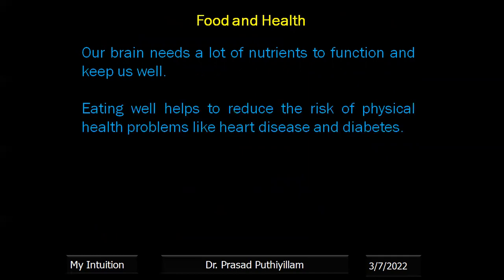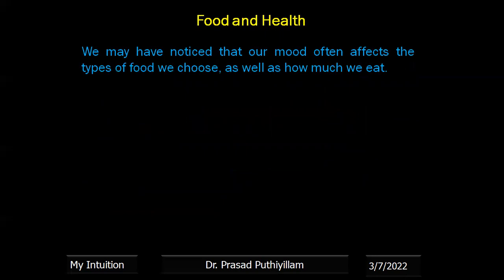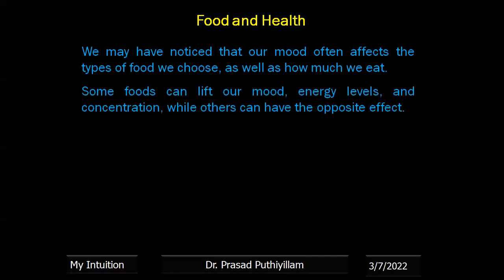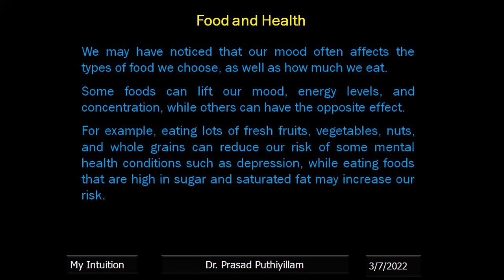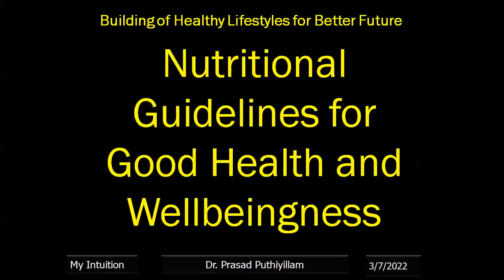The second topic is food and health. Our brain needs a lot of nutrients to keep us well. Eating well helps to reduce the risk of physical health problems like heart disease and diabetes. It also helps with sleeping better, energy levels and our general health. We may notice that our mood often affects the type of food we choose and how much we eat. Some foods can lift our mood, energy levels and concentration while others have the opposite effect. For example, eating a lot of fresh fruits, vegetables, nuts and whole grains can reduce our risk of some mental health conditions such as depression, while eating foods high in sugar and saturated fat may increase our risk. Having a healthy, balanced diet plays an important role in our overall health and well-being.